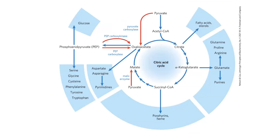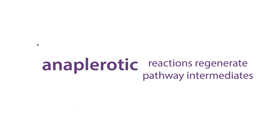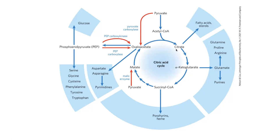If we siphon things out of the pathway, now we're not going to have those intermediates, and our pathway is going to be halted. That's why we need anaplerotic reactions — reactions that regenerate pathway intermediates. Because it's a cycle, if we regenerate one of these components, we'd be regenerating everything that came after it. So by feeding in intermediates at any of these points, we can basically boost our whole cycle.